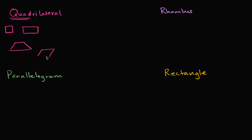This is a quadrilateral. Even this is a quadrilateral — let me make it look even weirder. Even this is a quadrilateral. So what's not a quadrilateral? Well, a triangle would not be a quadrilateral. It has three sides: one, two, three.